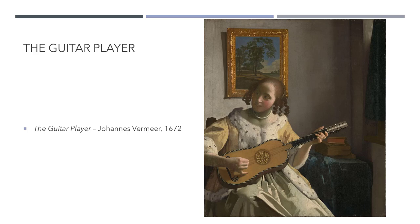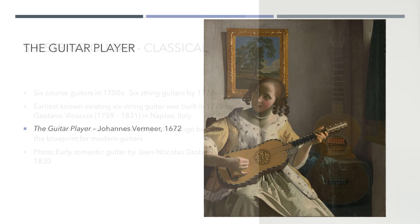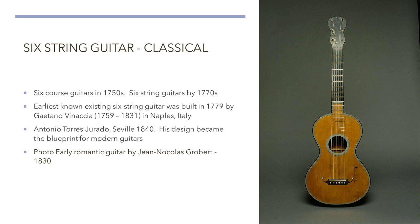So we've reached the end of what one would consider to be the medieval and Renaissance guitar period. At this point, the guitar continues to evolve until the mid-1700s. In the mid-1700s, we see the beginning of six-course and six-string guitars. Six-course guitars, we know, existed in the 1750s. There were six-string guitars in existence by the late 1770s. The earliest known six-string guitar was built in 1779 in Naples, Italy.